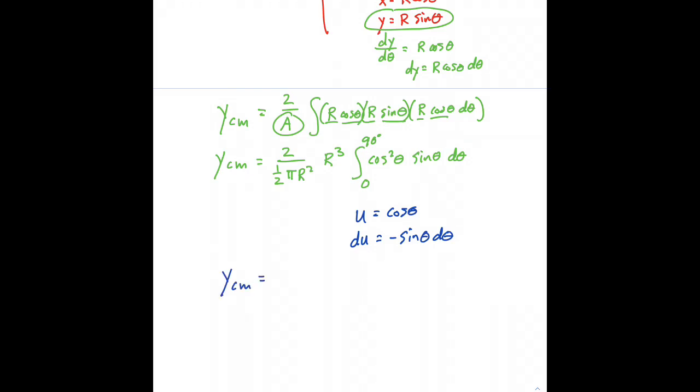Location of the center of mass is equal to, we can simplify this as 4 over π and then the r² cancels and we're left with 4 over π times r times the integral of u² right? Cosine squared and u is equal to cosine.